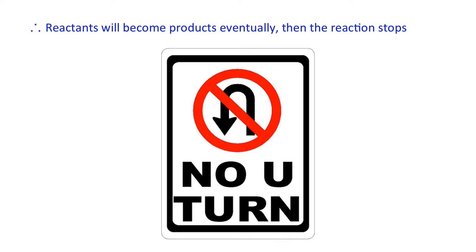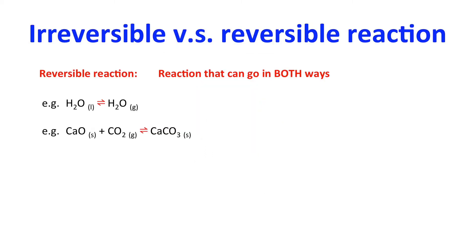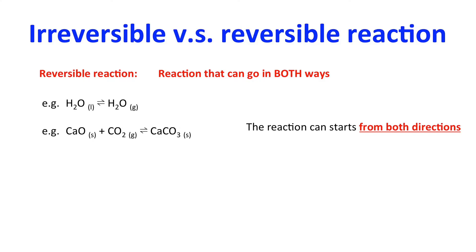This is only a matter of time. If the reactant is consumed, then the reaction stops. How about the reversible reaction? That means the reaction can start in both ways. For example, water and steam is a good example — you can boil water into steam or condense steam into liquid water. Similarly, calcium oxide can absorb carbon dioxide to form calcium carbonate, and you can do it in the reverse way to get back the calcium oxide.